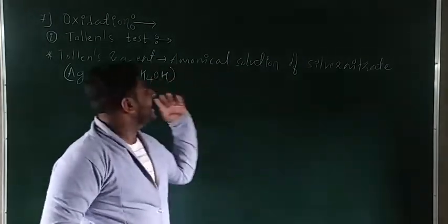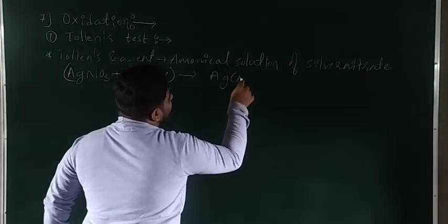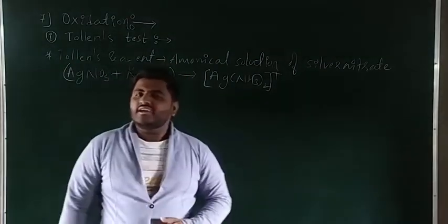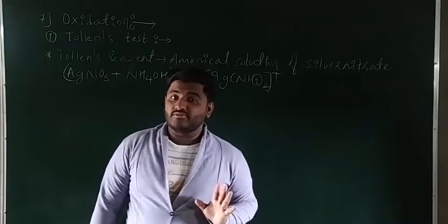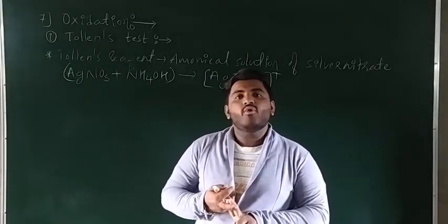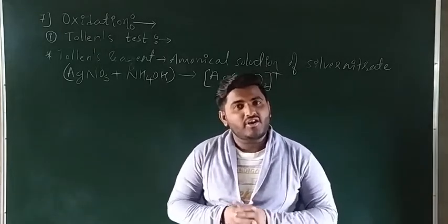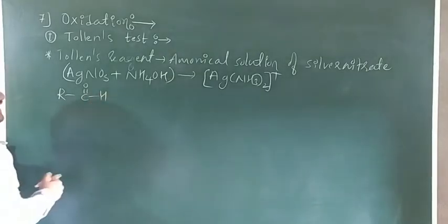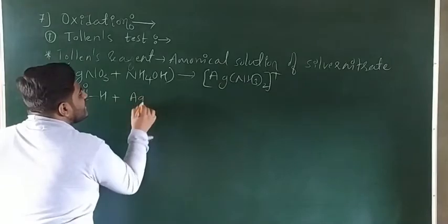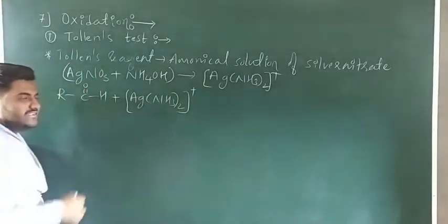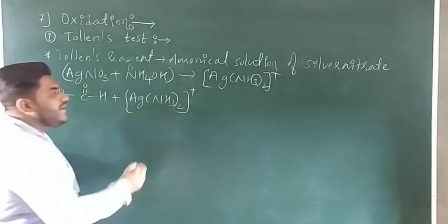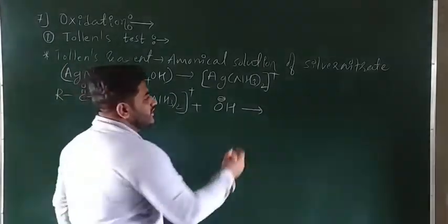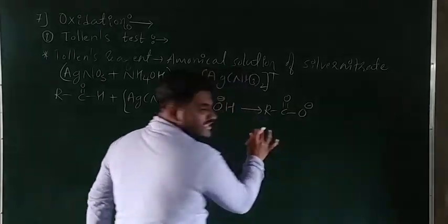In Tollens reagent, a basic medium is used. When you mix AgNO3 and NH4OH, the compound Ag(NH3)2⁺ is formed — this is our Tollens reagent. For the Tollens test, remember that Tollens test and Fehling test are only meant for the aldehydic functional group; they will not give a positive test for ketones. You take an aldehyde (R-C=O-H), add Tollens reagent Ag(NH3)2⁺ in basic medium (OH⁻), and the aldehyde is converted into a carboxylate ion R-COO⁻.